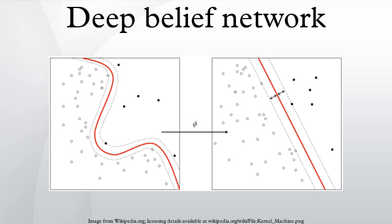This also leads to a fast, layer-by-layer unsupervised training procedure, where contrastive divergence is applied to each sub-network in turn, starting from the lowest pair of layers.